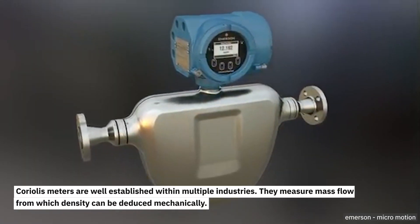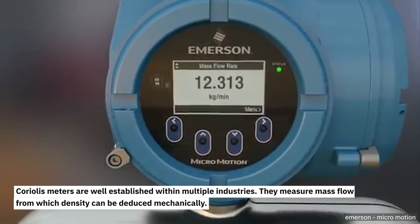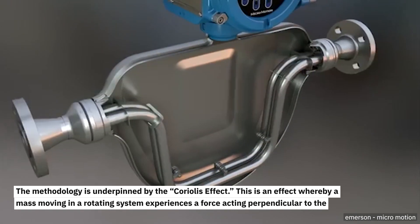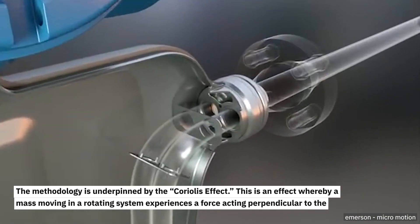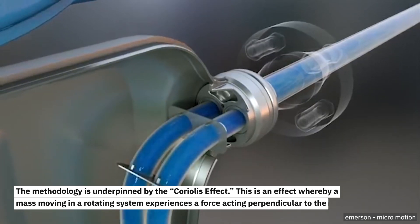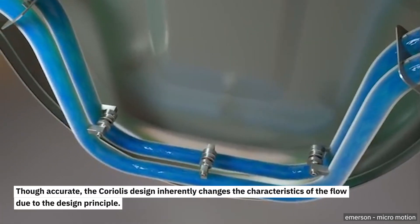Coriolis meters are well established within multiple industries. They measure mass flow, from which density can be deduced mechanically. The methodology is underpinned by the Coriolis effect. This is an effect whereby a mass moving in a rotating system experiences a force acting perpendicular to the direction of motion and to the axis of rotation. Though accurate, the Coriolis design inherently changes the characteristics of the flow due to the design principle.